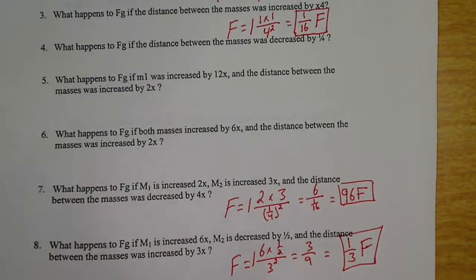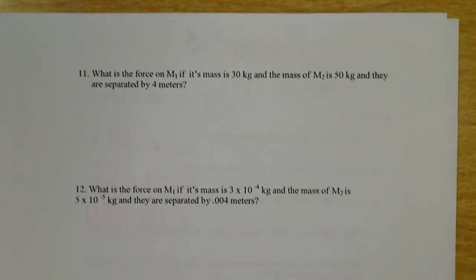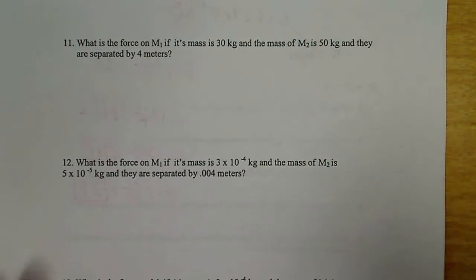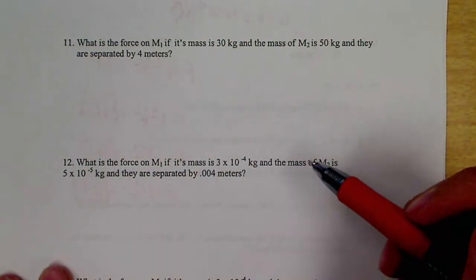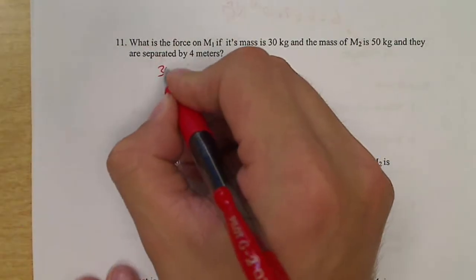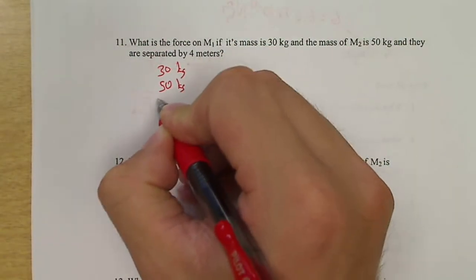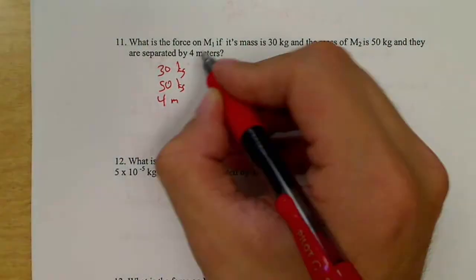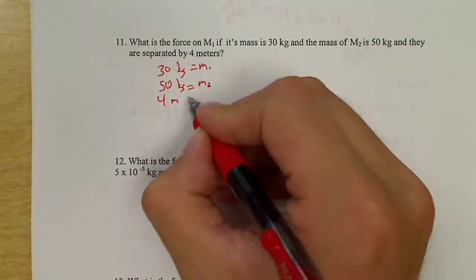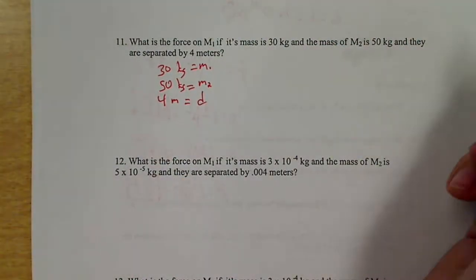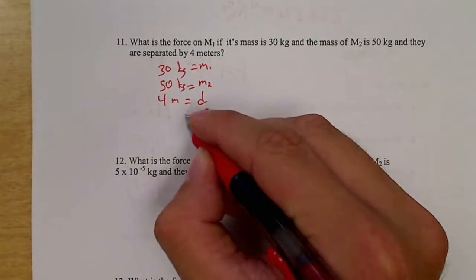Now let's do an example on the back. So what is the force on M1 if its mass is 30 kilograms and the mass of M2 is 50 kilograms and they're separated by four meters? Let's start how we'll start any problem. Let me write down those numbers. This would be a mass and this is a mass. Since we have two masses, we'll label one and two. This is a distance.